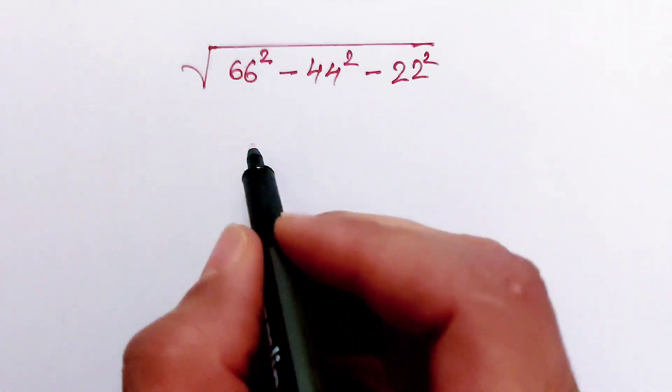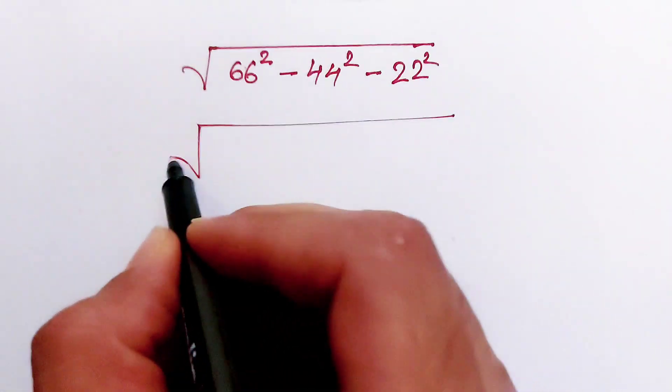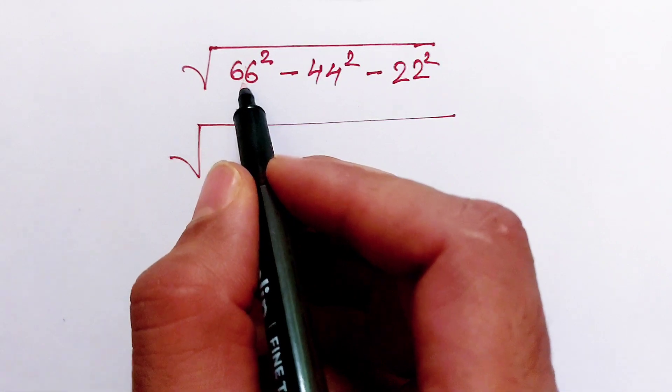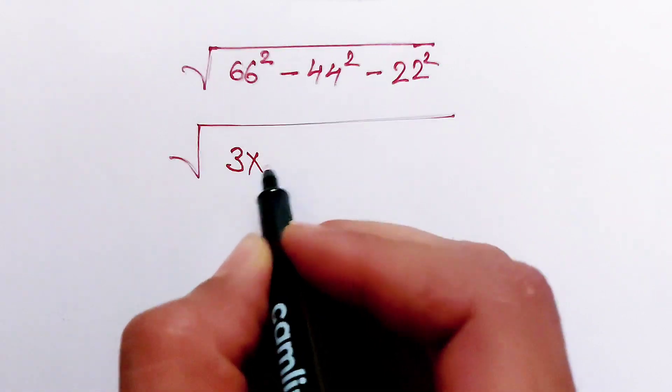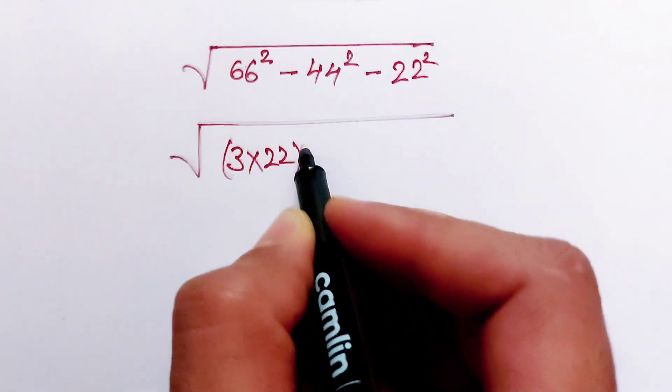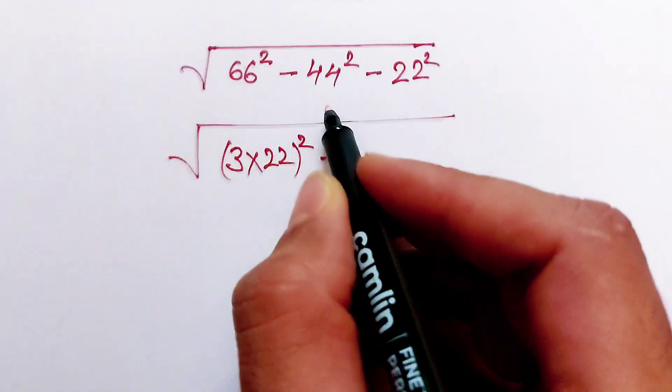Let's find out. First of all, we can write 66 squared as 3 multiply 22 squared, minus 44 again.